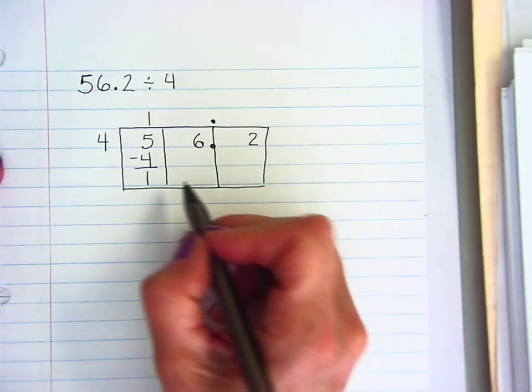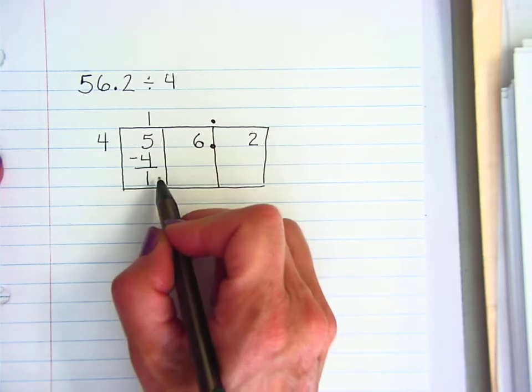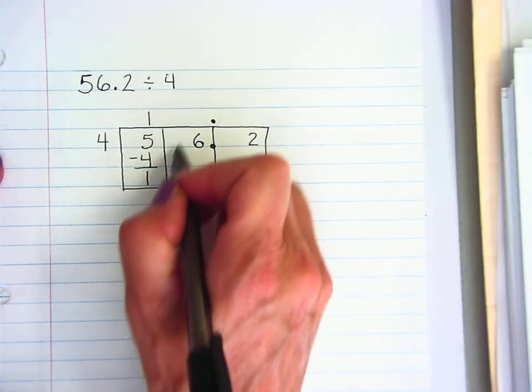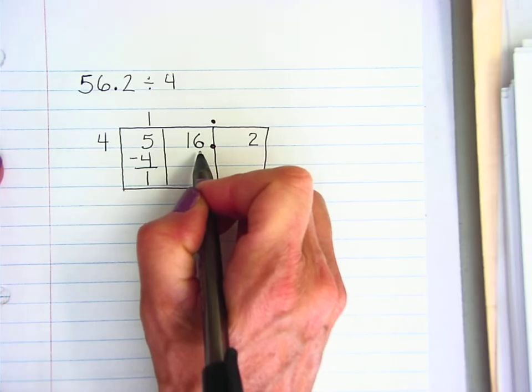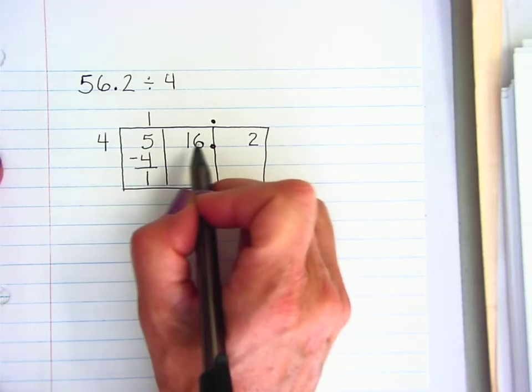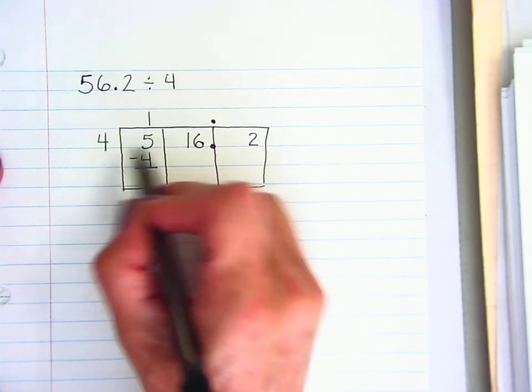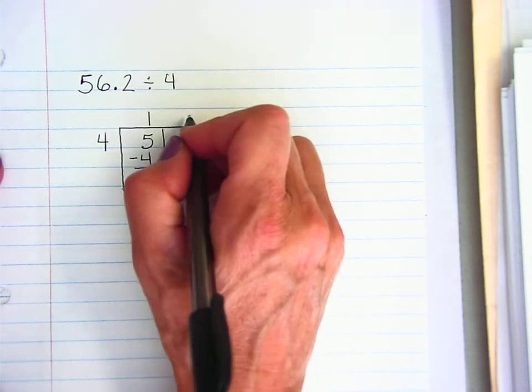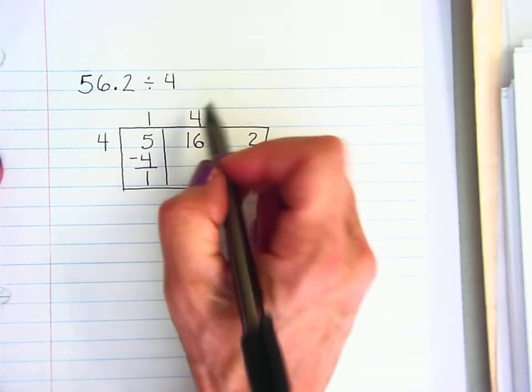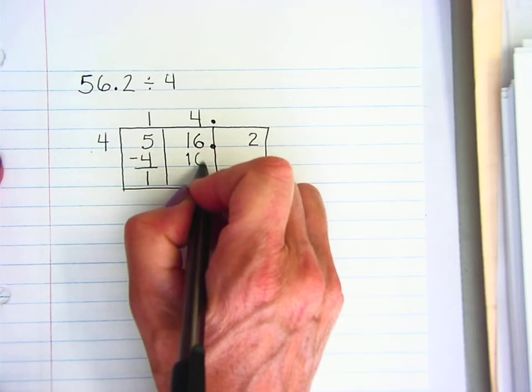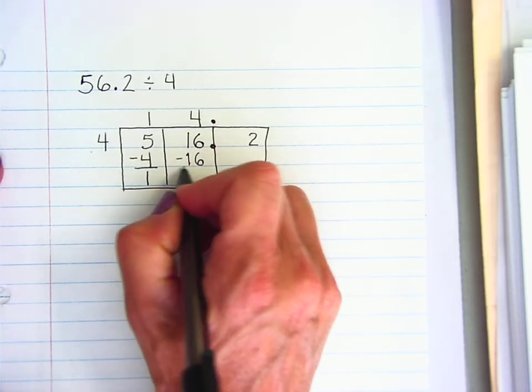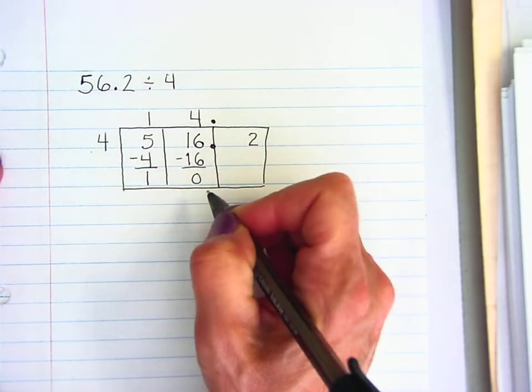Now here's where it's different. Instead of bringing down the 6, I'm going to bring the 1 up into the next box. So it's going to go here. I now have 16. So 4 will go into 16 four times. 4 times 4 is 16. I subtract and have 0 left over.